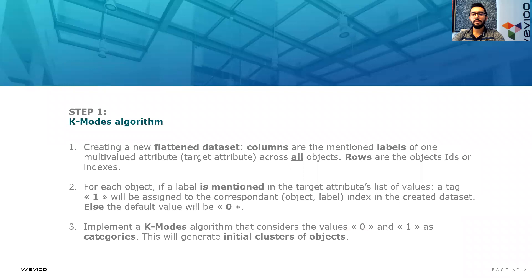For each object, if a label is mentioned in the target attribute's list of values, a tag one will be assigned to the correspondent object label index in the created dataset. Else, the default value will be zero. Then we implement a K-modes algorithm that considers the values zero and one as categories. This will generate initial clusters of objects.